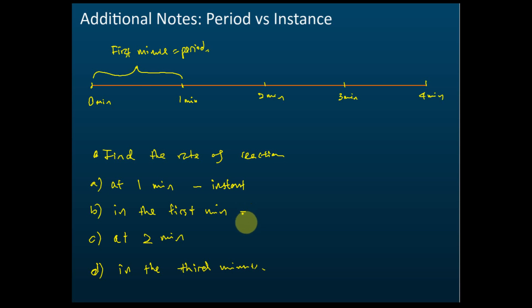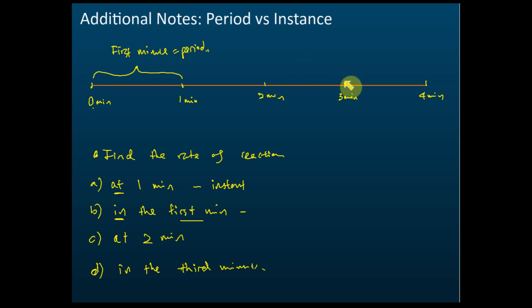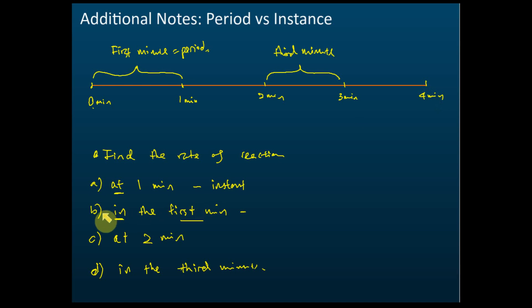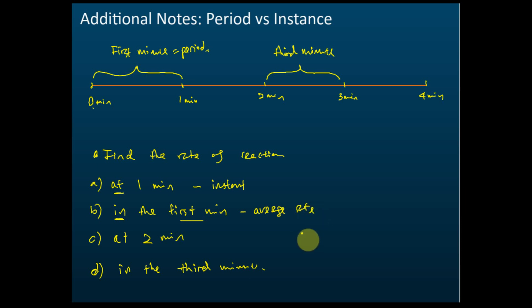The preposition 'at' means at one instant — so it's an instantaneous rate. 'In the first minute' means from zero to one minute — that is the first minute. From one to two is the second minute, and from two to three is the third minute. So (b) 'in the first minute' is a period from zero to one minute, and therefore you need to find the average rate.